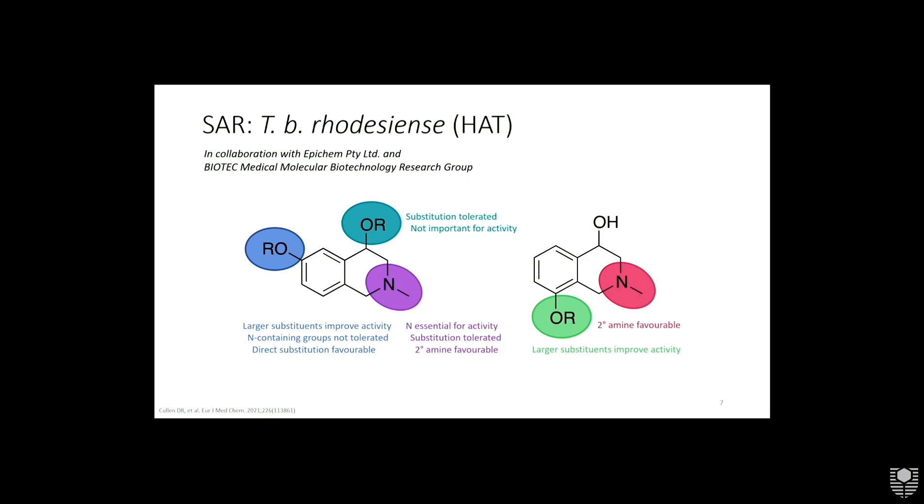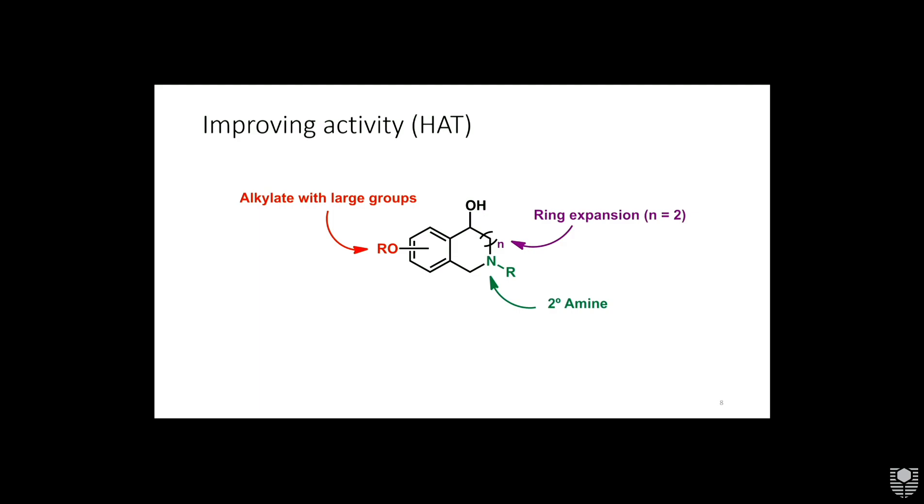So that's where my research comes in. My project actually started at EpiChem, where they found that this tetrahydroisoquinoline had activity against TB rhodesiense, which is one of the parasites responsible for HAT. They were willing to collaborate with us here at Curtin. A PhD student Danica Cullen jumped on board, along with a few honours and third-year students, and got to work synthesising derivatives of this scaffold. All these derivatives were sent to our collaborators at Biotech in Thailand who tested them against the parasite. Fast forward a few years and about 80 novel derivatives later, we have a pretty good idea of the structure-activity relationship.